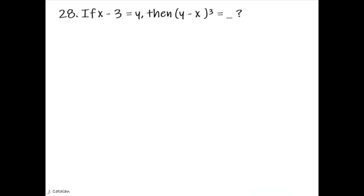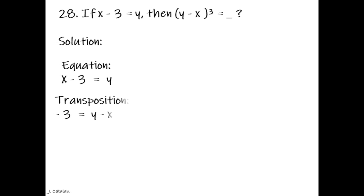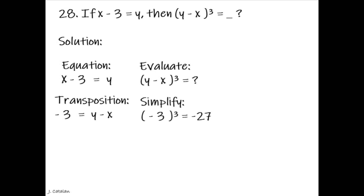If x minus 3 equals y, then y minus x to the power of 3 equals underscore. Solution. The equation is x minus 3 equals y. By transposition, negative 3 equals y minus x. Evaluating y minus x to the power of 3: negative 3 to the power of 3 equals negative 27.